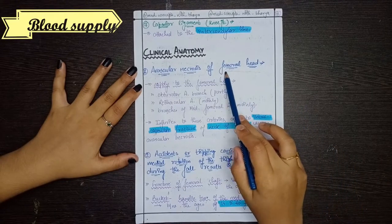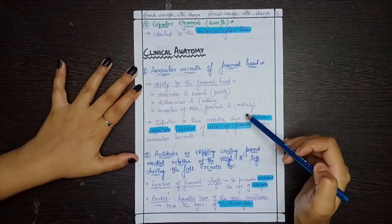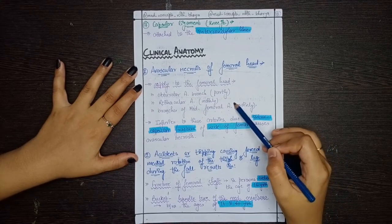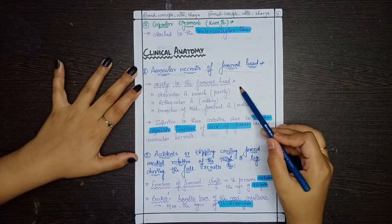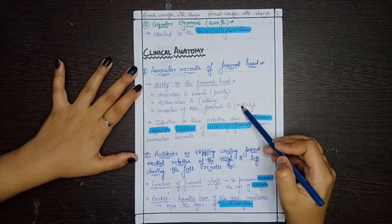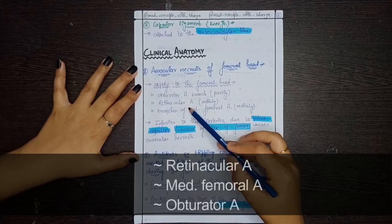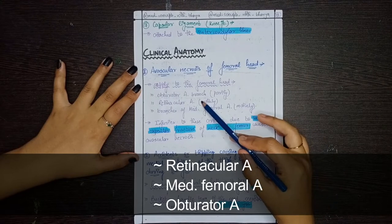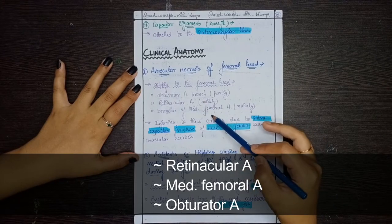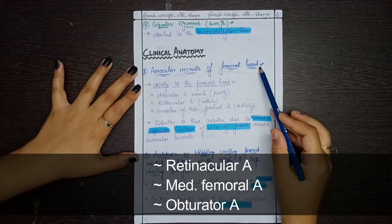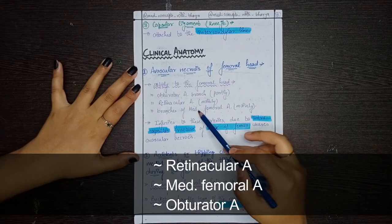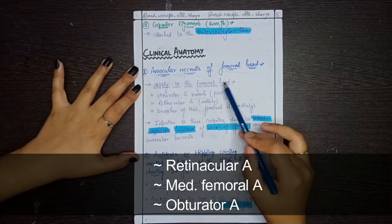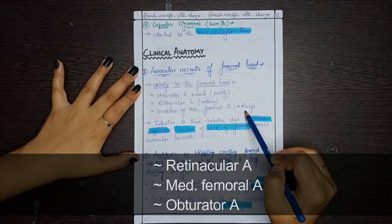There are three arteries that supply the femoral head area. Two are the main supplies: the retinacular artery and the branches of the medial femoral circumflex artery. These are the main blood supplies to the femoral head. There is also a partial supply from a branch of the obturator artery. These are the three main blood supplies to the femoral head.